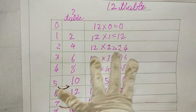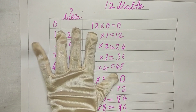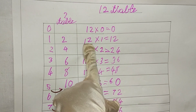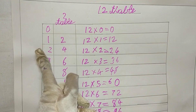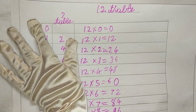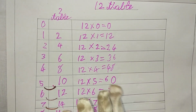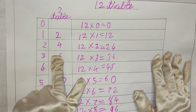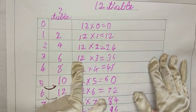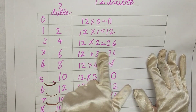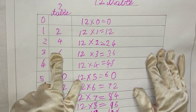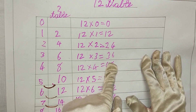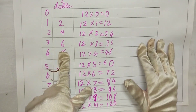Let's go through it one more time. 12 into 0 is 0. 12 into 1 is 12 — I'm joining the 1 and 2 together. 12 into 2 is 24 — joining the 2 and 4. 12 into 3 is 36 — joining the 3 and 6. 12 into 4 is 48 — joining the 4 and 8.